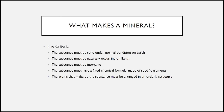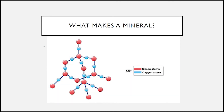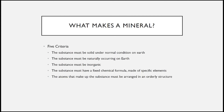The fourth criteria that must be met for a substance to be considered a mineral is that it must have a fixed chemical formula, or be made of specific elements. A good example is the mineral quartz. All types of quartz are made up of two elements: silicon and oxygen. It is made up of one silicon atom and two oxygen atoms, and all types of quartz mineral are composed of these same two elements.